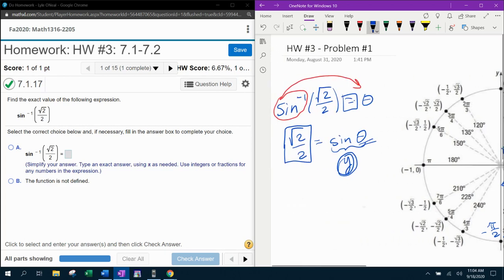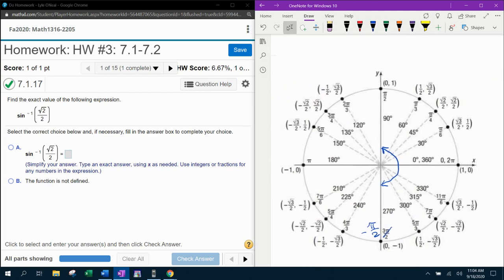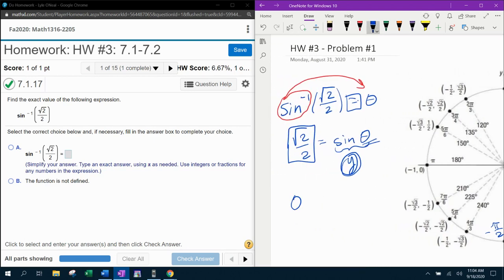So again, we're looking for a y-coordinate of square root of 2 over 2. And here it is. This is where we have a y-coordinate of square root of 2 over 2 that's within the allowed range. So that answer is going to be pi over 4 or 45 degrees. The angle we're looking for is pi over 4.